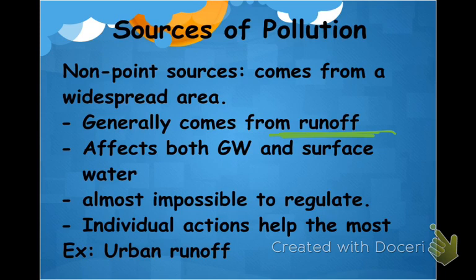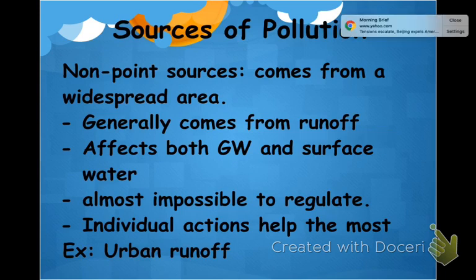Non-point source pollution affects both groundwater and surface water. Although the ground can filter out many things, it can't filter out everything, so pollutants can get into groundwater. Water running off over land will pick up any pollutants on the grass and deposit them into bodies of water. This is almost impossible to regulate because it's everywhere.